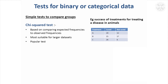We'll go back to the presentation now for the second part, where I'm going to be looking at tests for binary or categorical data and also looking at correlation and regression. If any of you have already come across something called the chi-squared test, this is another very well-known test. It's a test for comparing outcomes when you've got binary or categorical data — where something either happens or doesn't, or things fall into three or more categories.